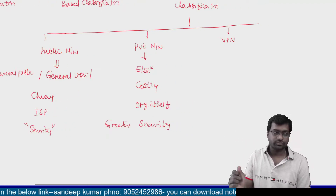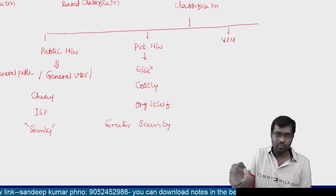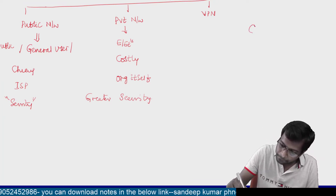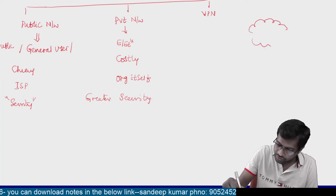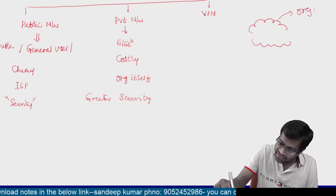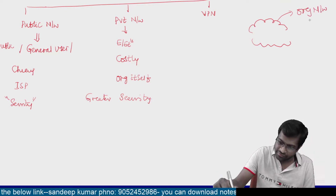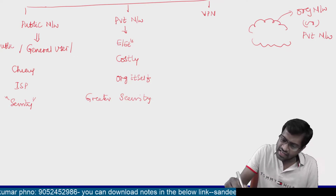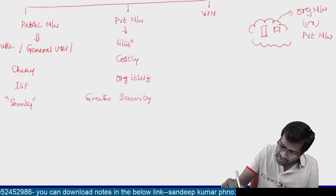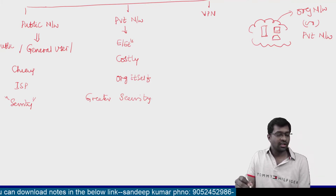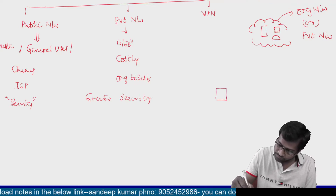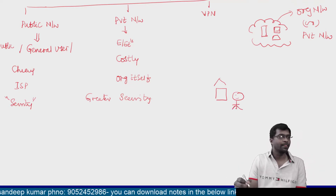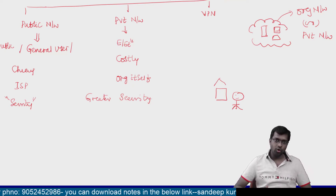The last one is a Virtual Private Network. What do you mean by VPN? It is almost the same concept as remote access. Let us say we have an organization network — which we can also call a private network — with devices like servers and PCs. If I stay at home and want to work from home, I cannot lay a separate private network from home to office — it would be very costly.